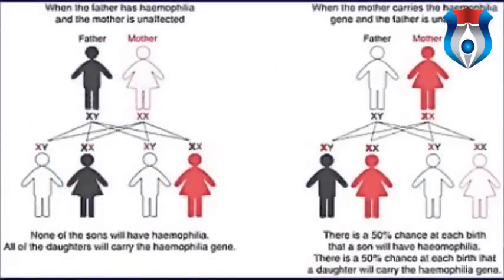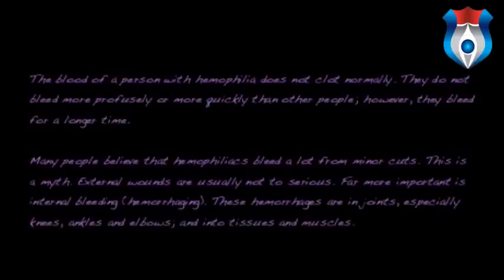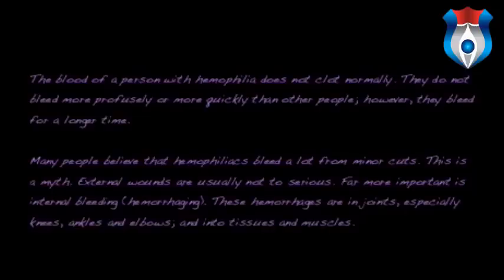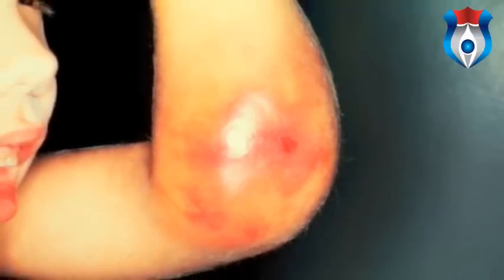When the father has haemophilia and the mother doesn't, none of the sons will have haemophilia but all daughters will carry the gene. When the mother carries it, there is a 50% chance that boys will have haemophilia and a 50% chance that daughters will carry the gene. The blood of a person with haemophilia does not clot normally — they do not bleed more profusely or more quickly, but they bleed for a longer time. Many people believe haemophiliacs bleed a lot from minor cuts, but this is a myth. External wounds are usually not too serious. Far more important is internal bleeding or hemorrhaging — in joints especially (knees, ankles, elbows) and into tissues and muscles — leading to very painful swelling.